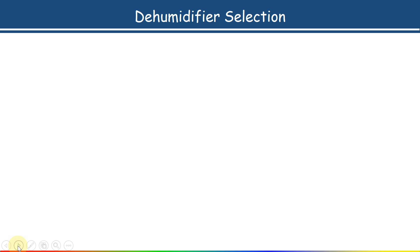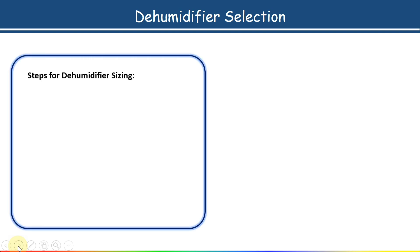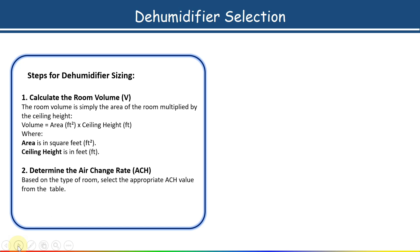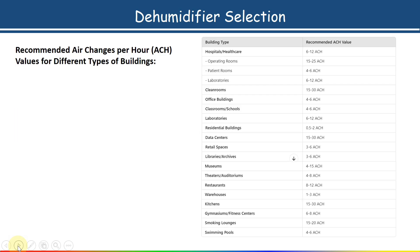Here I will show you the dehumidifier selection criteria — the steps we have to follow for selecting a dehumidifier. Similar to what we discussed in humidifier sizing, the first step is to calculate the room volume in cubic feet, which you will get from the drawing. The second step is to determine the air changes per hour (ACH) rate — based on the type of room, select the appropriate ACH value from the table, where recommended values are given for different types of buildings.